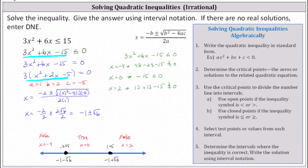Analyzing the number line, the graph of the solution is a closed interval from negative one minus square root six to negative one plus square root six. Let's write this using interval notation. Because the endpoints are included, we use square brackets.